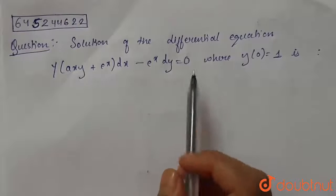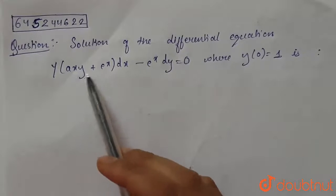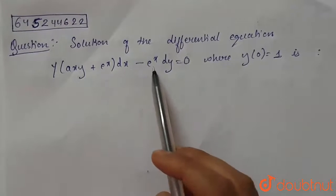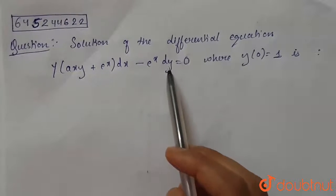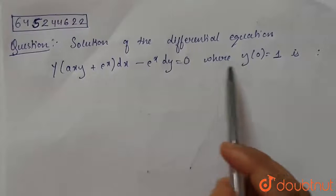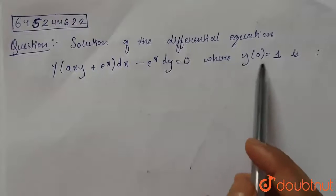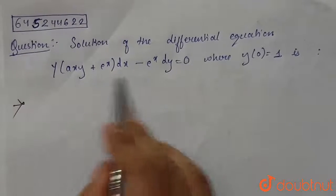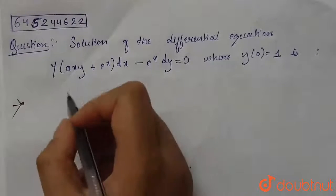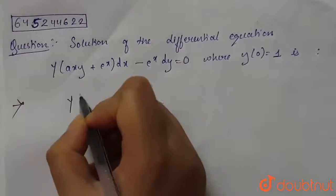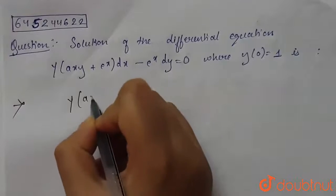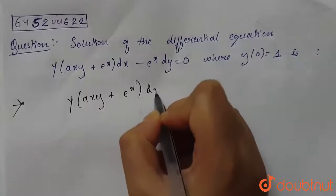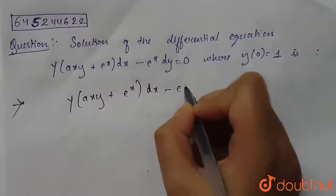Today our question is: find the solution of the differential equation y(axy + eˣ)dx − eˣ dy = 0, where y(0) = 1. So we have to find the solution of this differential equation. We are given y(axy + eˣ)dx − eˣ dy = 0.